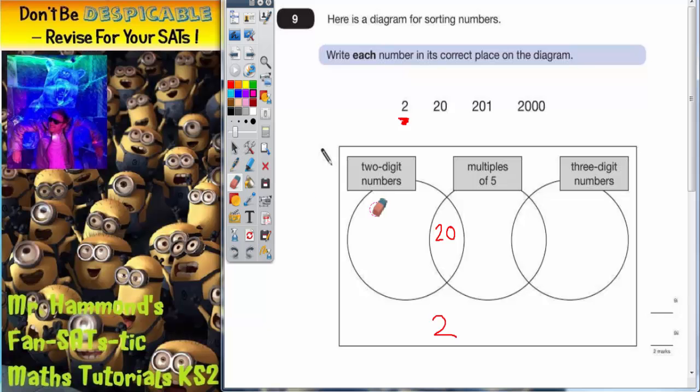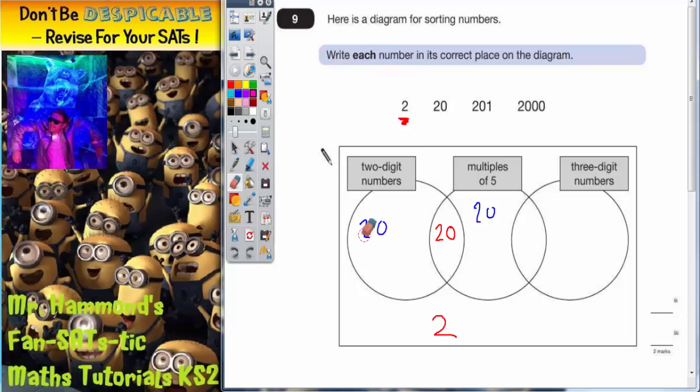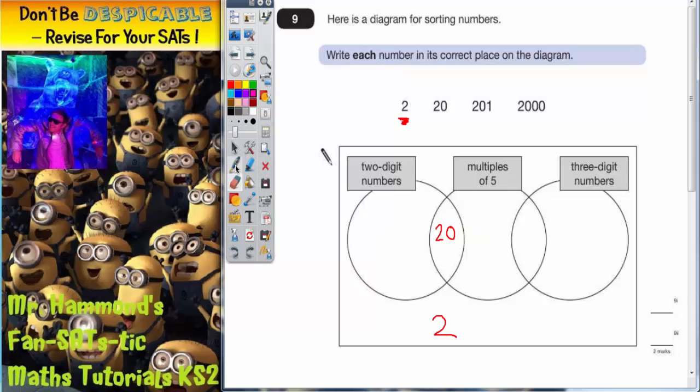What you shouldn't do is write the number 20 in both circles like this. They don't want to see that because that is not an efficient way of doing it. Yes 20 has got 2 digits and yes 20 is a multiple of 5, but they want to know that you realize that you can put it in both circles at once by putting it in the overlapping bit. So it's all about the overlapping bit.